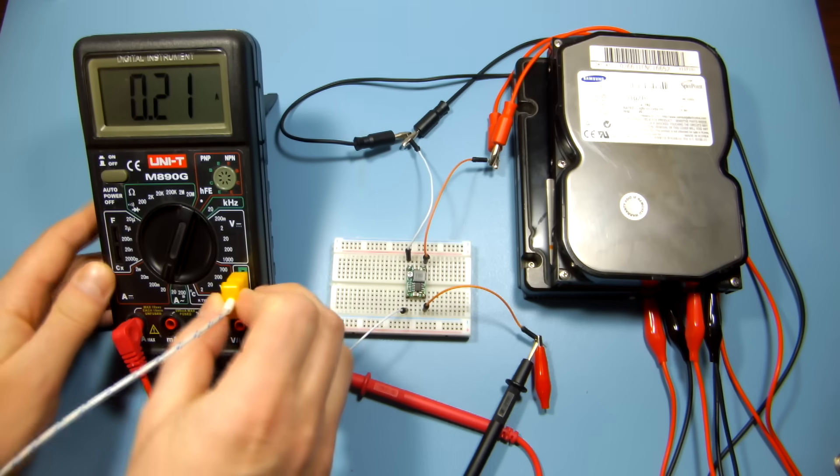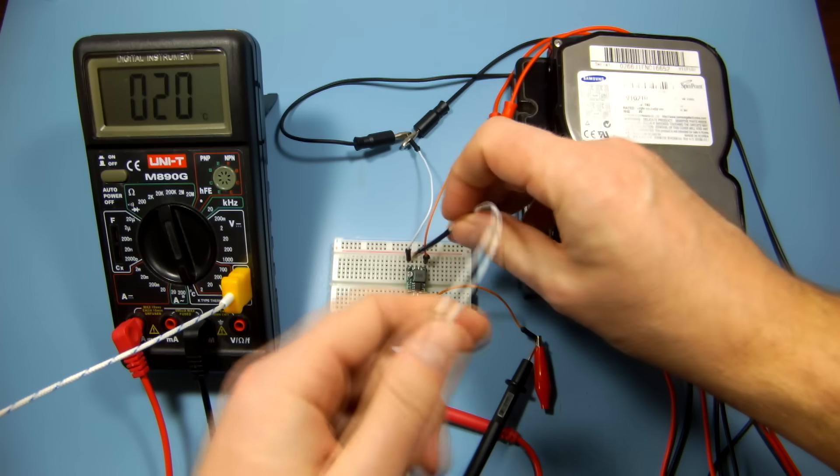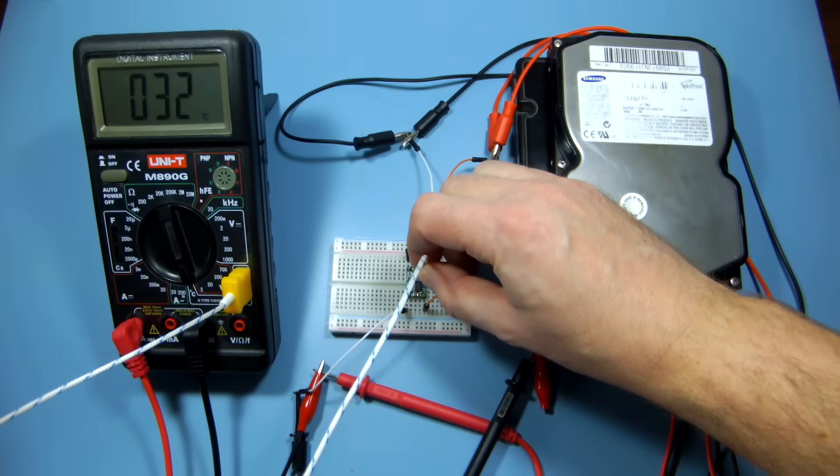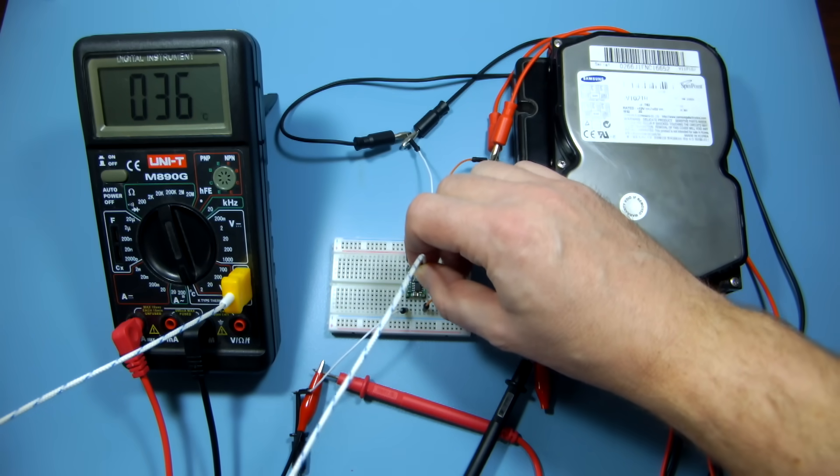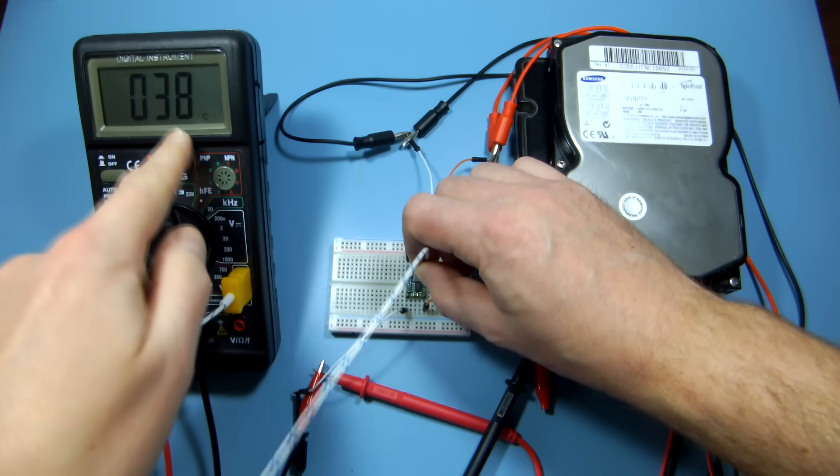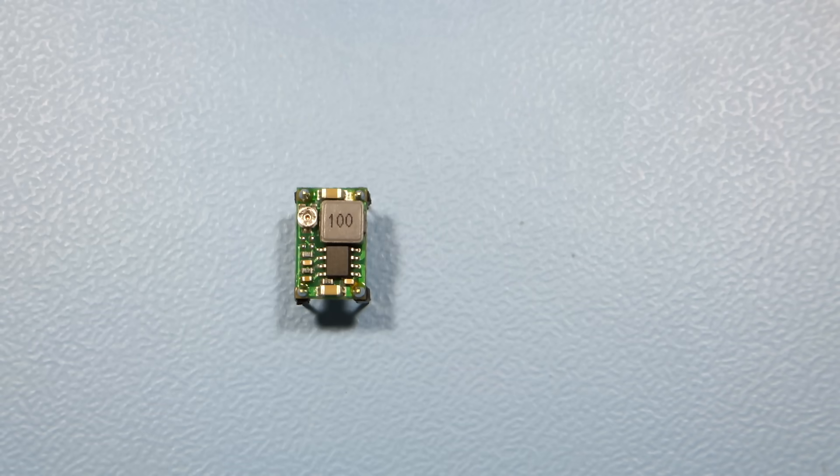Now let's check the temperature. As you can see, the buck converter stays at only 38°C or 100°F. In this example, the superiority of the buck converter is very clear.